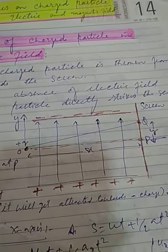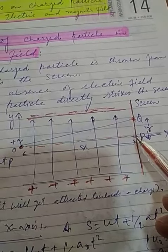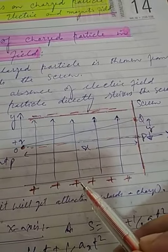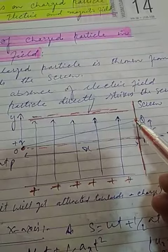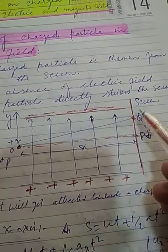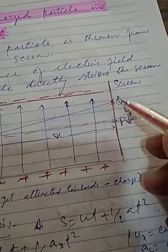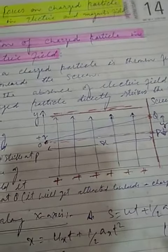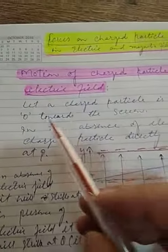So before — when there was no electric field — the particle strikes the screen at point P. When we applied the electric field, it got deviated and strikes the screen at point Q. The distance between P and Q is y, in the y-direction.